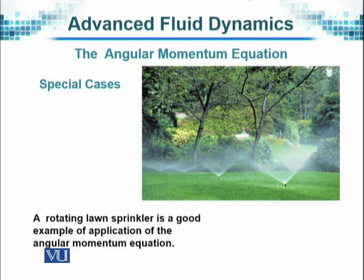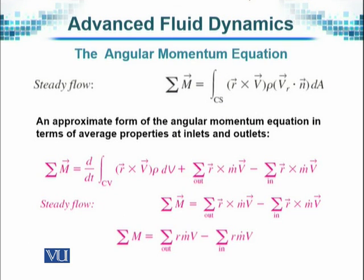A rotating lawn sprinkler is a good example of application of the angular momentum equation. For steady flow, the total angular momentum over a control system will be given by r cross V, where r is the radial vector and V is the velocity vector, times ρ the density, times Vr dot n the normal unit vector in the direction normal to the radius, times the area of cross section dA.